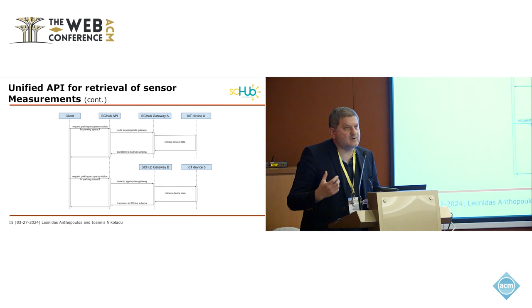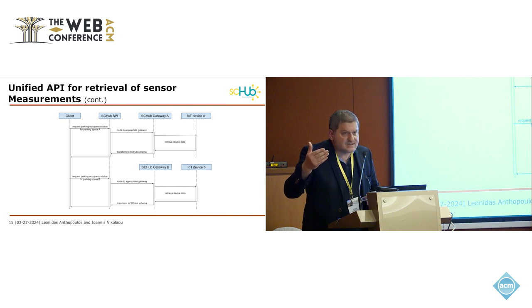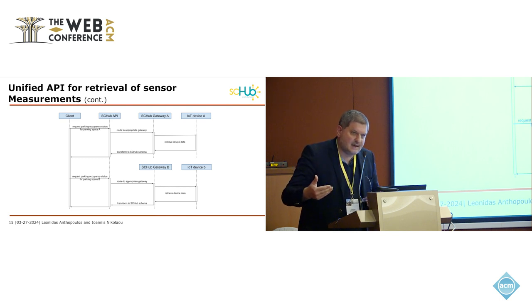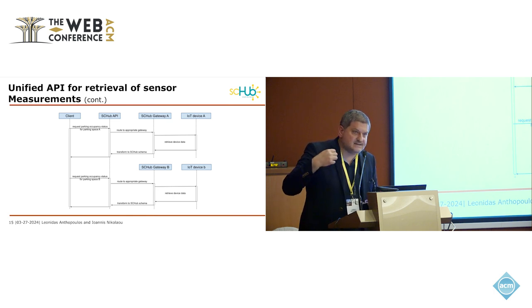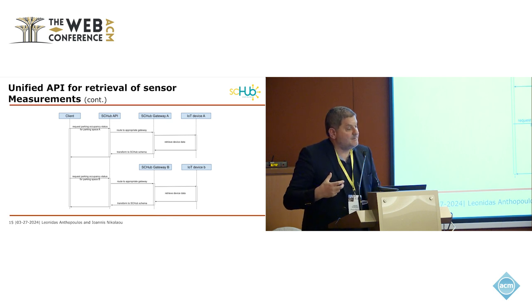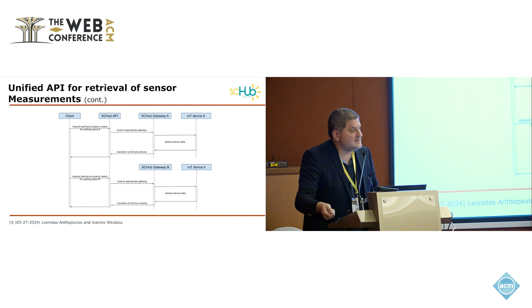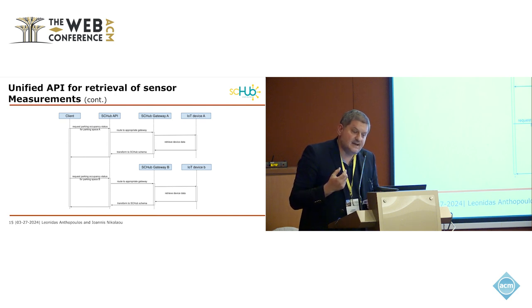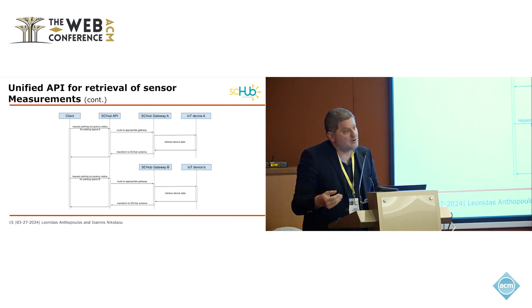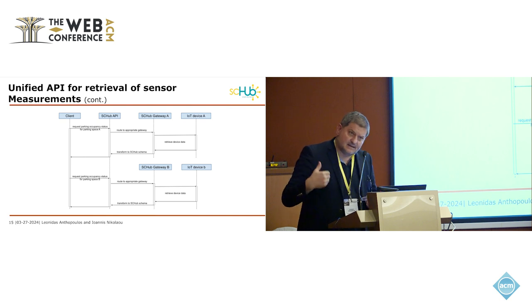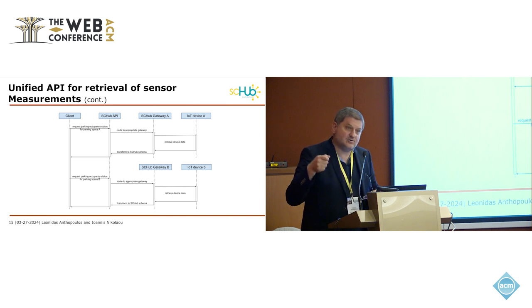If we define a data taxonomy for the city, we can imagine a catalog of the different types of data available. A consumer could access this taxonomy, plug their application into the SE Hub, and collect only the type of information needed. Similarly, if someone wants to transmit information to the smart city, they use this taxonomy of available services — which can be updated to include new service types — and plug their application or device in to transmit information to the smart city.